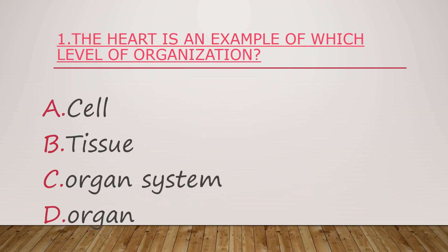Number one. The heart is an example of which level of organization? A. Cell. B. Tissue. C. Organ System. D. Organ.